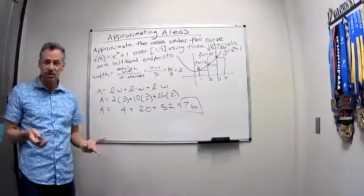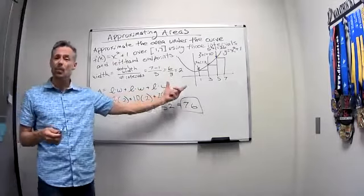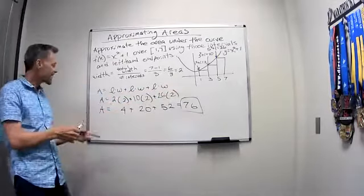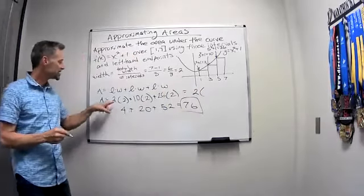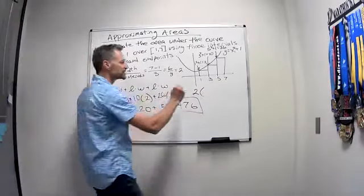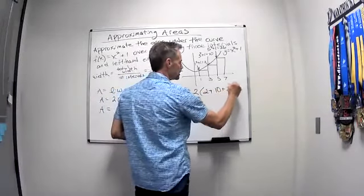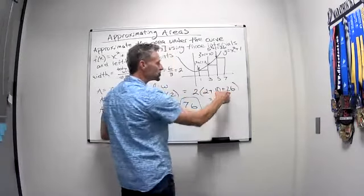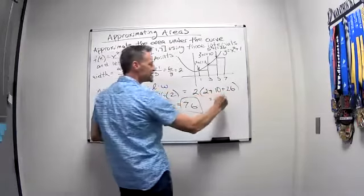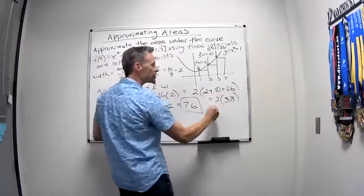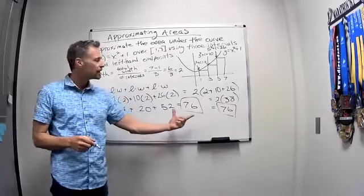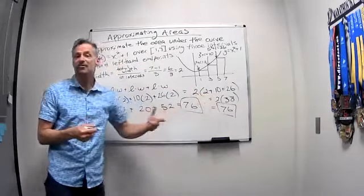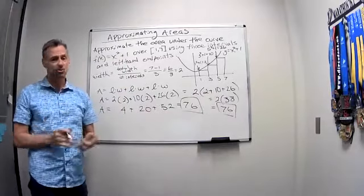Now, if you wanted to, since all of these are going to have the same width, you could factor the width out and it's just the height. It's 2 plus 10 plus 26. So it's 2 times 38. Well, 38 times 2, 76. Again, we get the same number. So there's a little trick to make it a little easier if you want to, since they're all the same width, you can always do that.